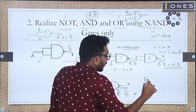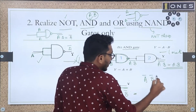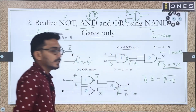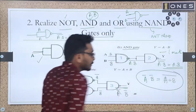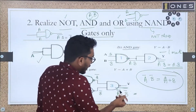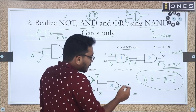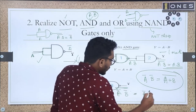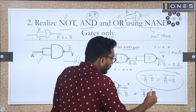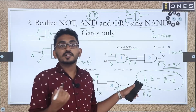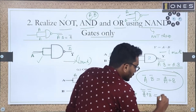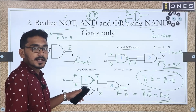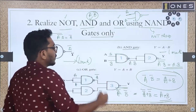Applying De Morgan's theorem: A-bar complement dot B-bar complement equals A plus B whole complement, and taking the complement again gives A plus B. The double complement cancels, yielding A OR B. Each gate realization (NOT, AND, OR) is worth 1 mark, totaling 3 marks for this question.